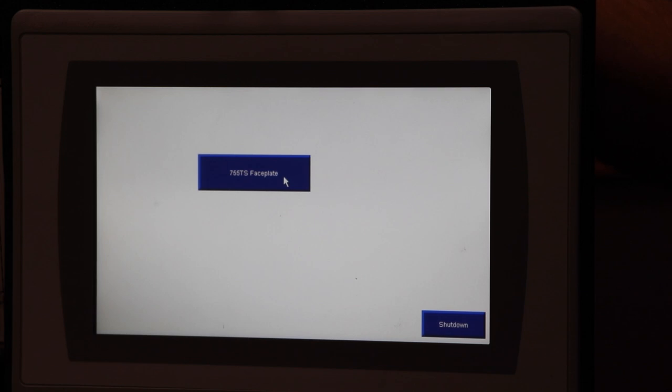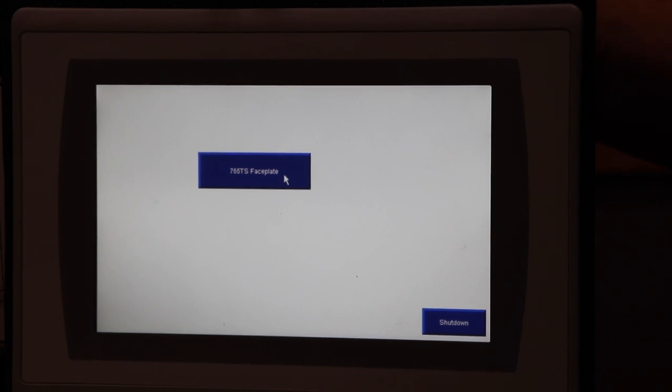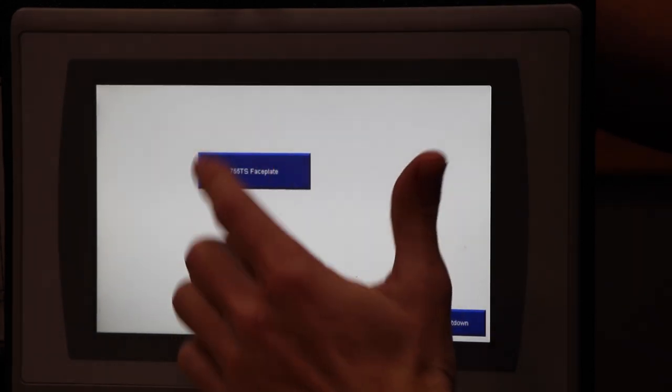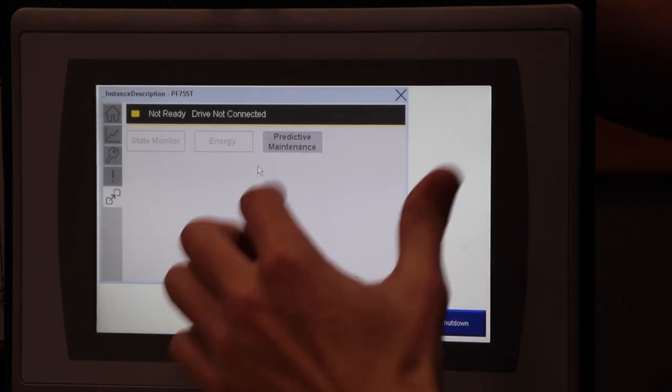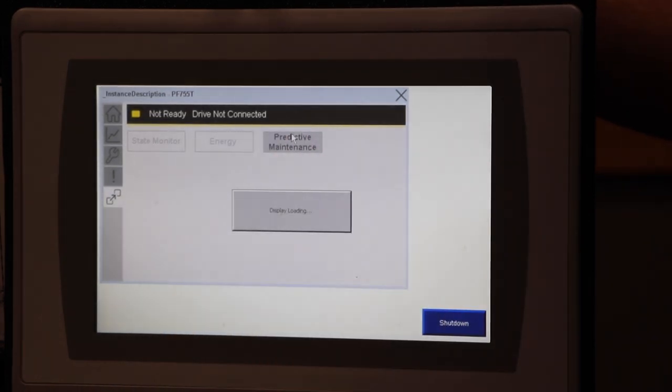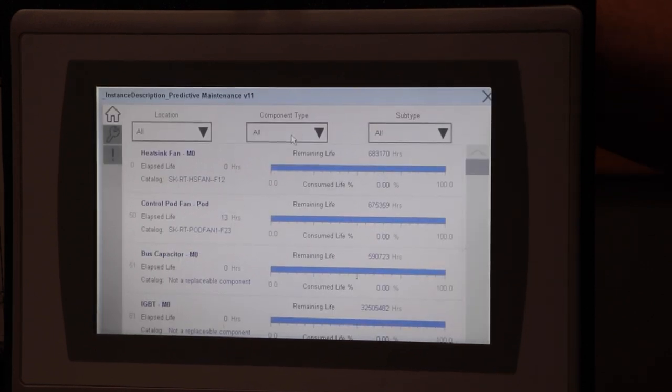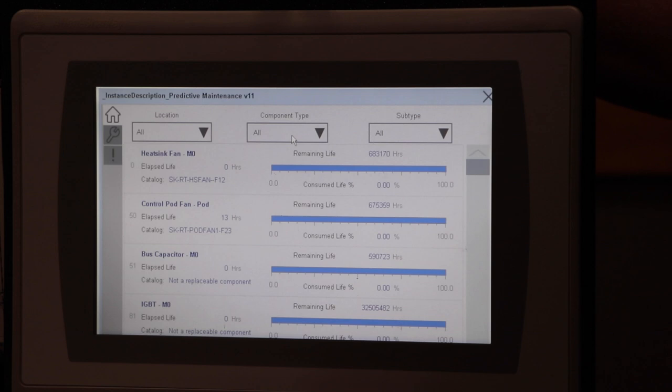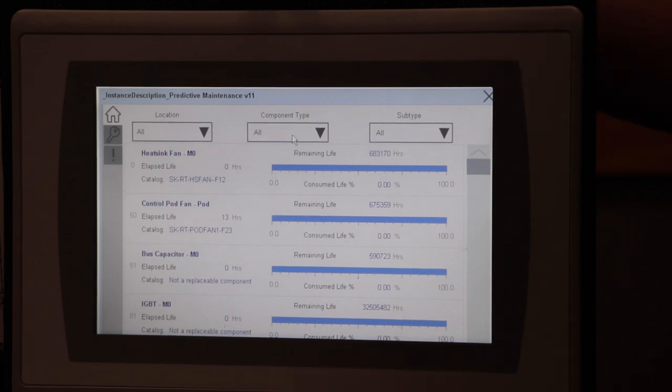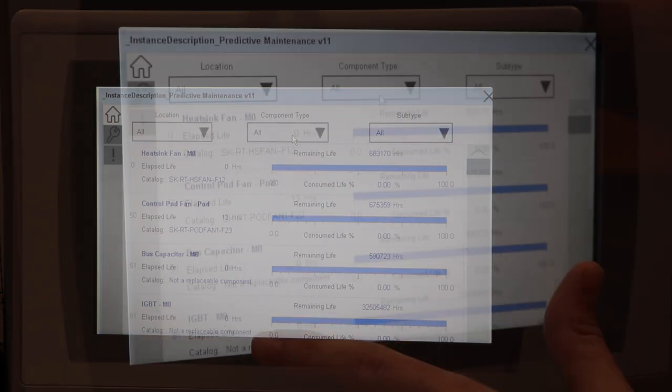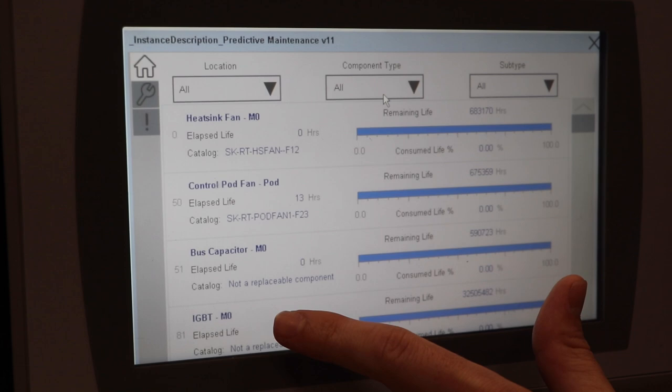If we launch our program here we can go ahead and select the predictive maintenance feature on our panel view and we are able to now track the progress of the life cycle of key components within the drive. Shown here are vital components such as the bus capacitors and the IGBTs.